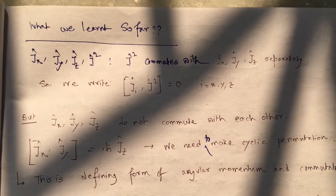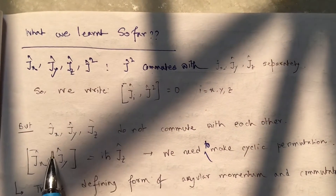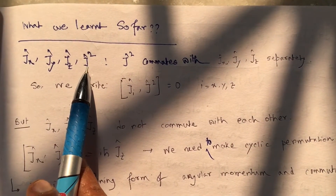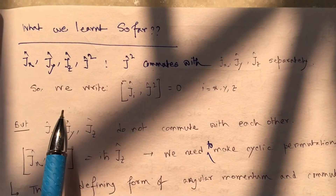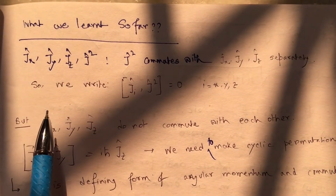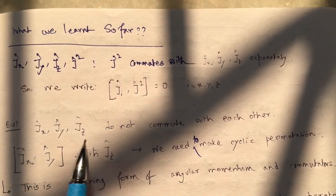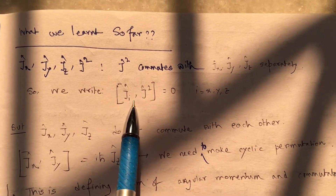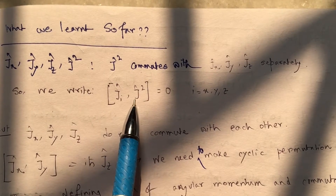What we have learned so far regarding J operators: the total angular momentum is denoted by the J² operator. These are individual components of angular momentum, and now we are dealing with quantum mechanics. These components do not commute with each other, but they do commute with the total value of the angular momentum, which gives us the general commutation relation between the individual component and the total angular momentum operator.